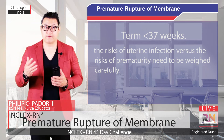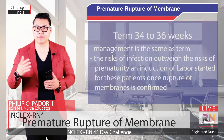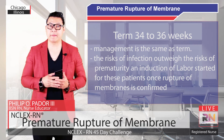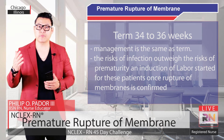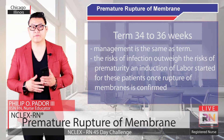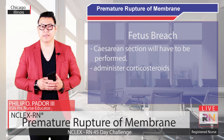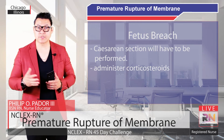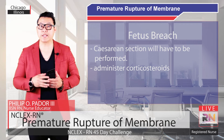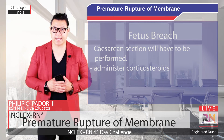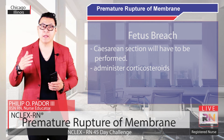For patients who are preterm — less than 37 weeks — the risk of uterine infection versus the risk of prematurity needs to be weighed carefully. For late preterm patients from 34 to 36 weeks and 6 days estimated gestational age, management is the same as term, as the risk of infection outweighs the risk of prematurity, and induction of labor is started once rupture of membranes is confirmed. If the fetus is breech, cesarean section will have to be performed. Between 24 weeks and 33 weeks and 6 days, the risk of fetal lung immaturity from prematurity is very high; thus, it is important to administer corticosteroids which enhance fetal pulmonary maturity.